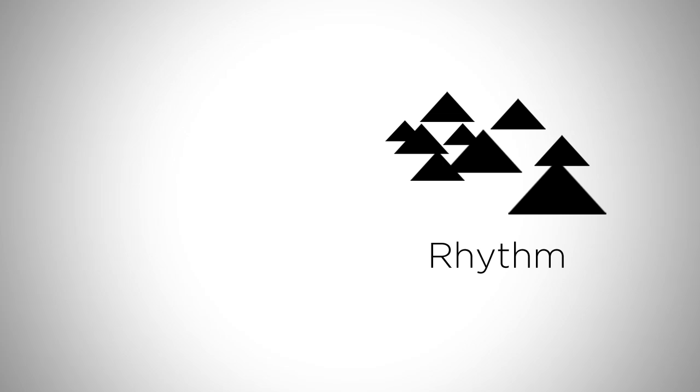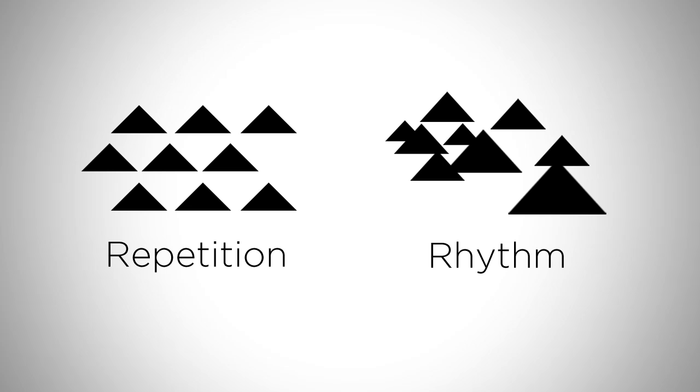Hey guys, this is Matt Kaur from ControlPaint.com. The principles of design are simply visual tools that help you structure your images. But it's possible that you've heard of today's principles, rhythm and repetition, in terms of music. But they've actually got visual meanings as well. We'll start off with the most basic of the two, which is repetition.